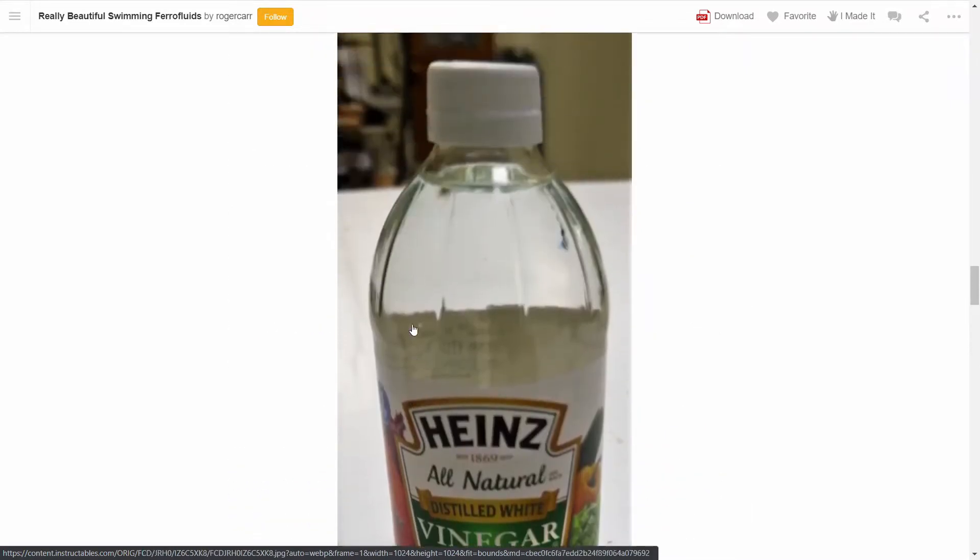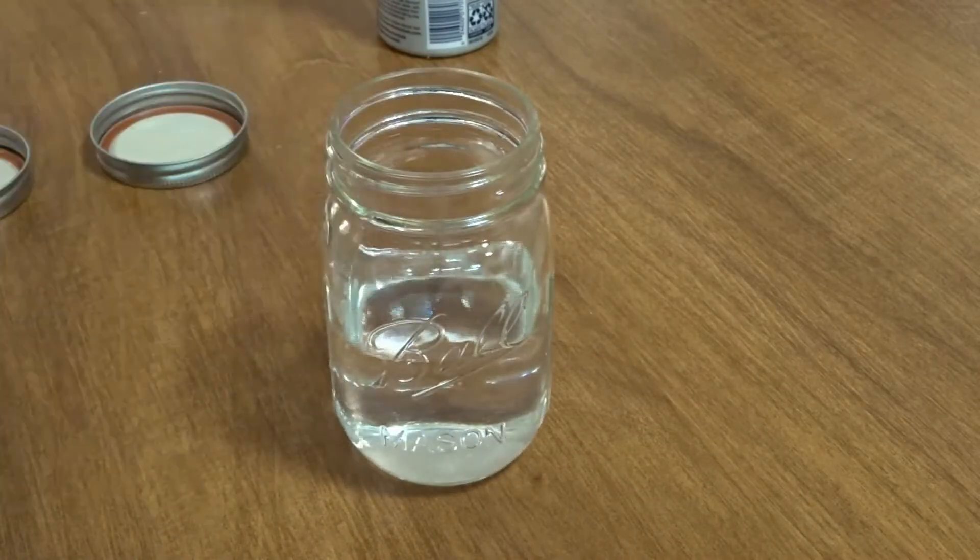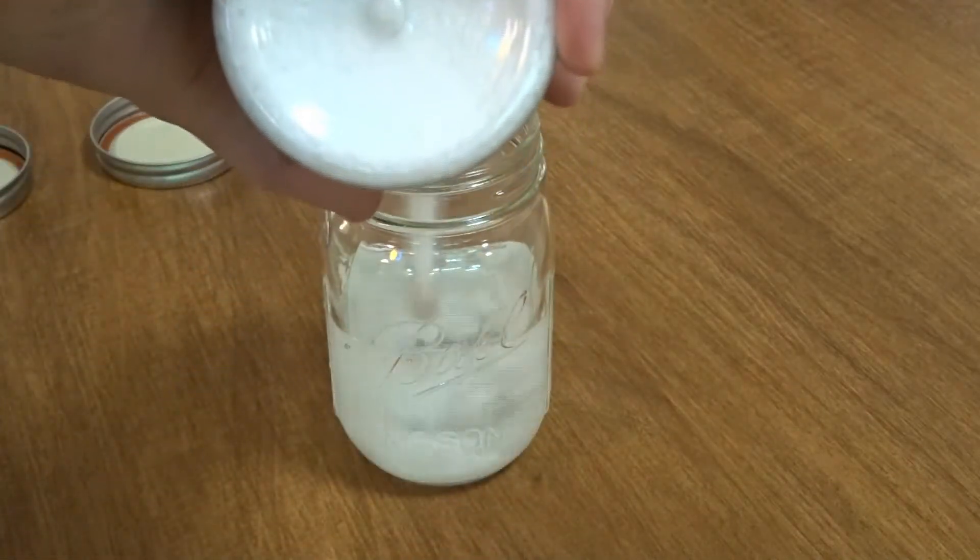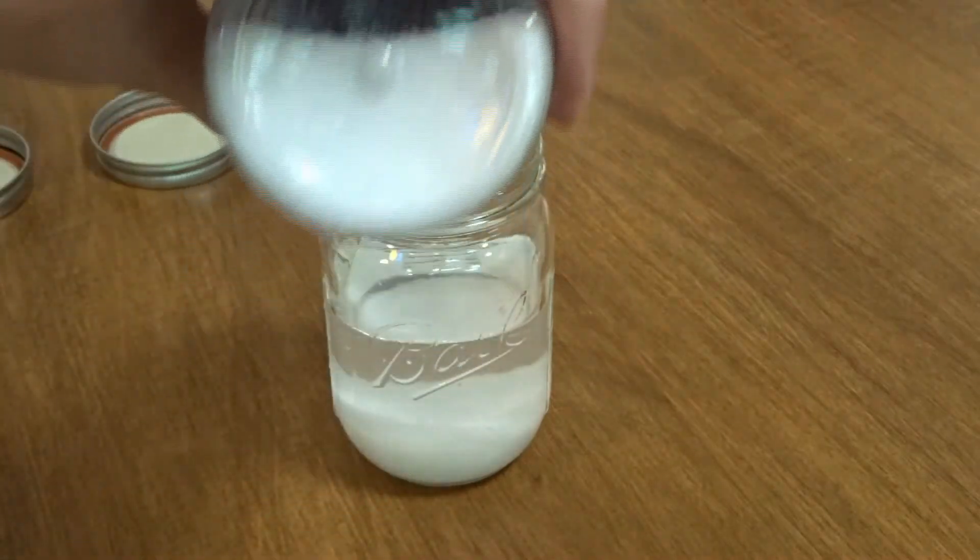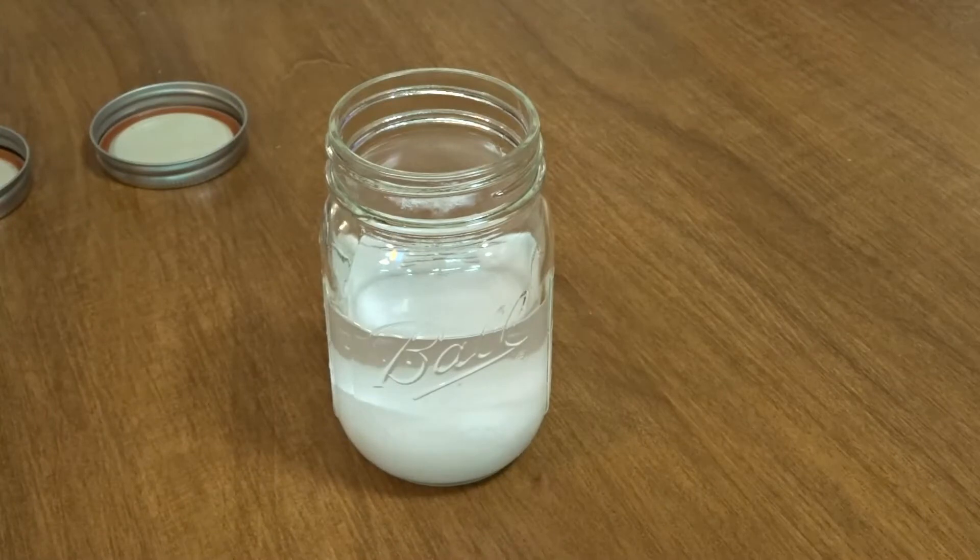Alright, enough talk. Let's make some ferrofluid displays. The first step is to prepare some salt water. Now I'm not exactly sure why the salt water helps this stuff not stick, but side-by-side tests show that it does, and even the commercial displays appear to use it. So there must be something to it. If anyone has any insights as to why this might be, leave a comment below. I'd love to hear what you think.